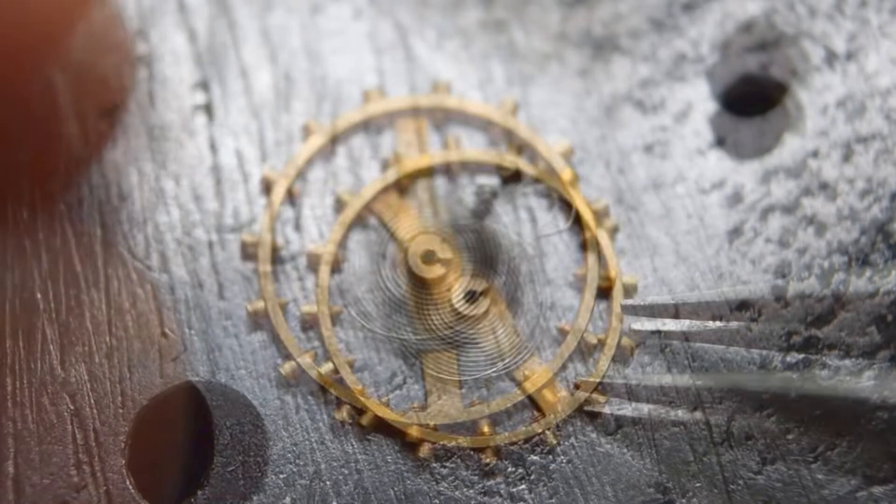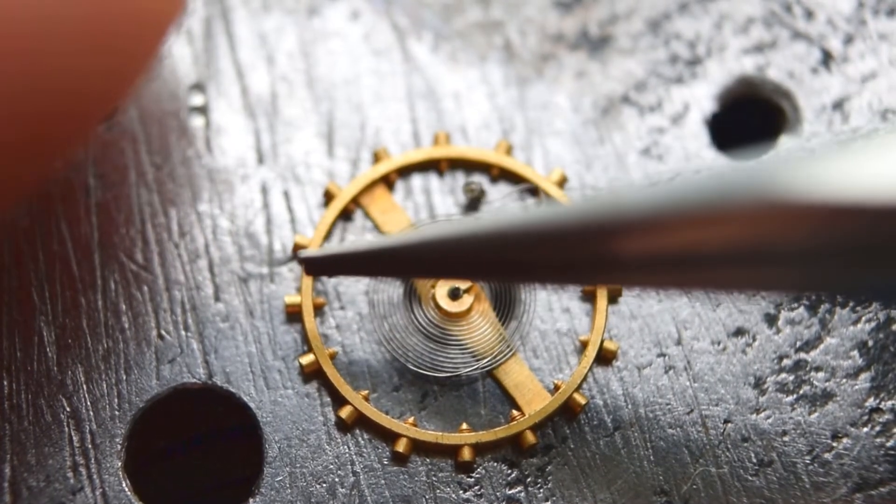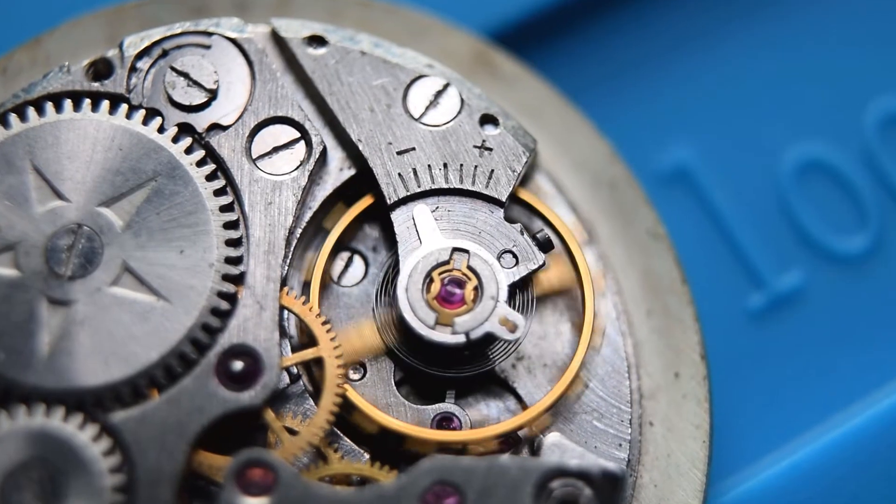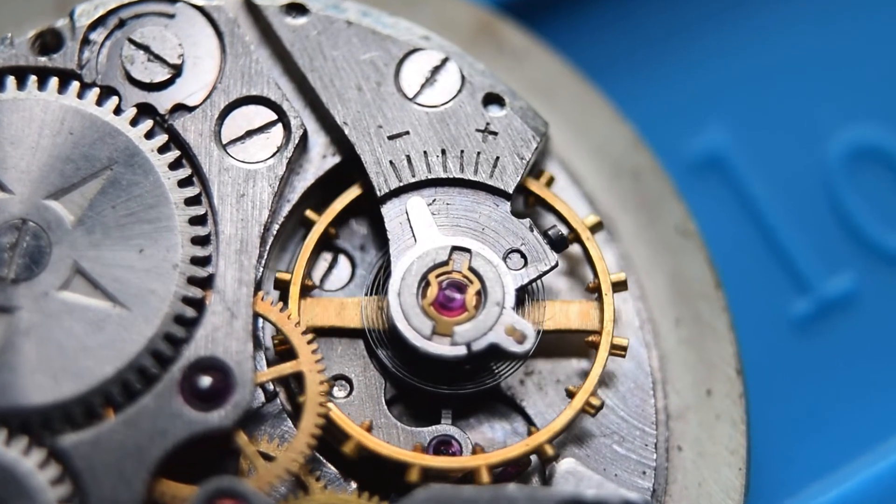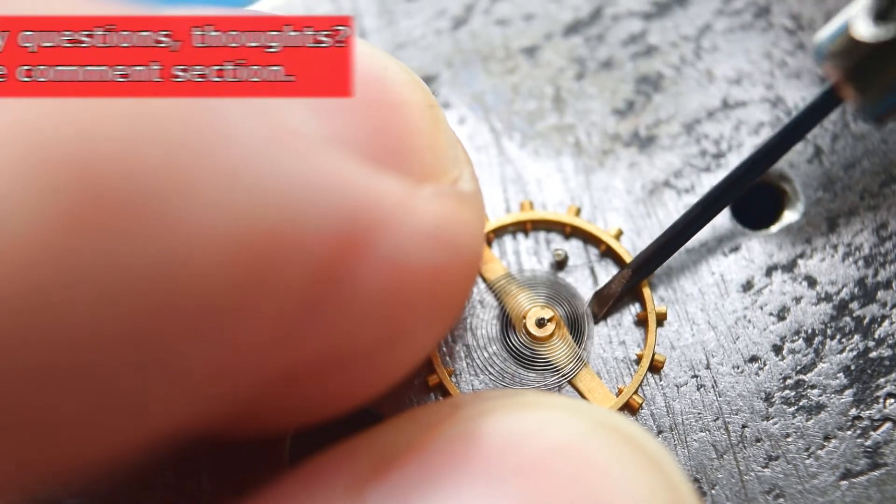Okay, so as you see here, the hairspring is bent. Here is the roller jewel and here is the stud, so the end of the hairspring, and I know that from a working movement. Let's start this delicate operation.